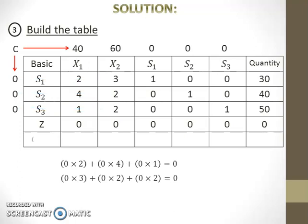The last row is for c minus z. C minus z is simply obtained by subtracting the value of z from the value of c on top of the table.